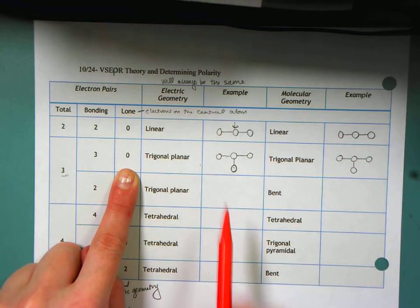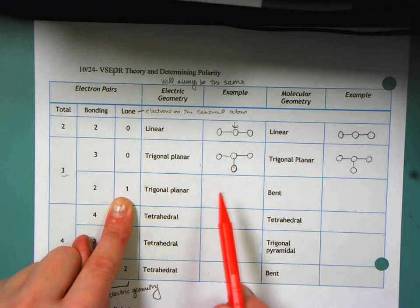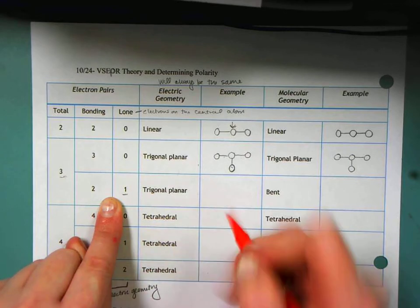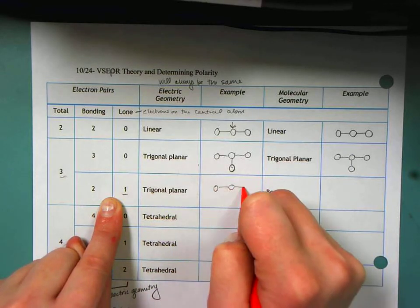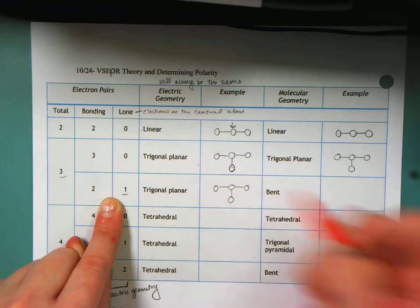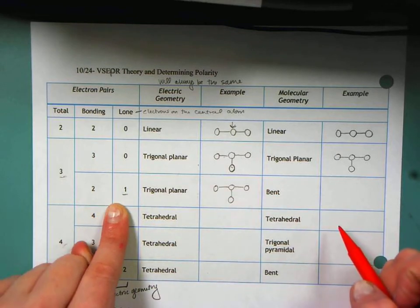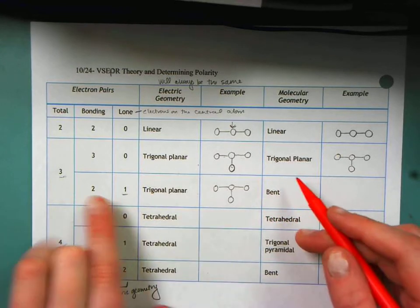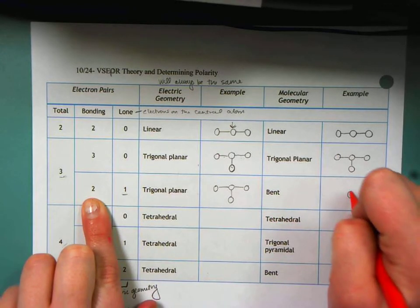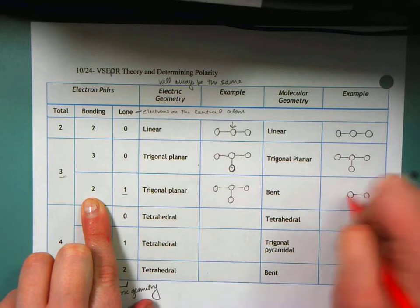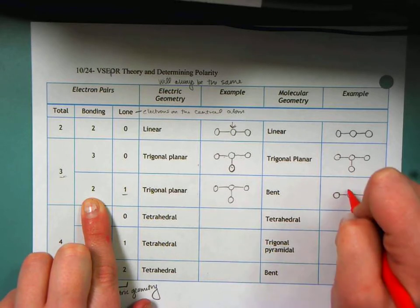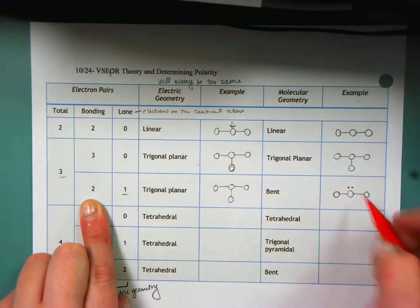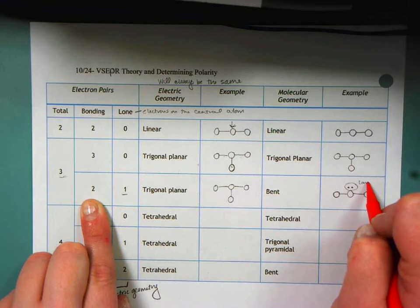For my electric geometry, I'm going to draw the same thing for trigonal planar, despite the fact that I now have a lone pair of electrons. So I would draw the exact same little structure where my central atom is making three bonds. However, for my molecular geometry, this is going to change. So now I have my central atom making two bonds with a lone pair of electrons.